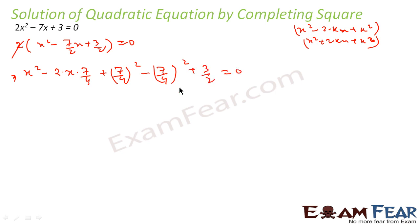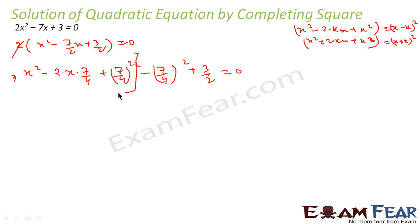We know x² - 2kx + k² = (x - k)². So here I've converted to that form: x² - 2·x·(7/4) + (7/4)² = (x - 7/4)². Since k was 7/4 — because 7/2 = 2·(7/4) — I added and subtracted (7/4)². This gives (x - 7/4)² = (7/4)² - 3/2.